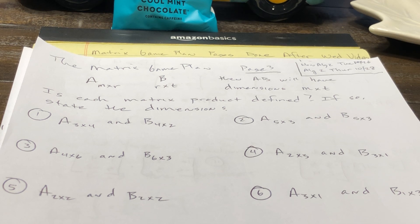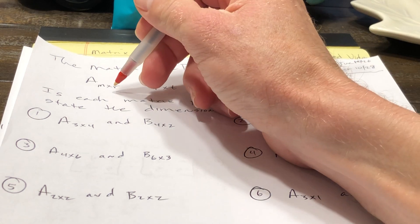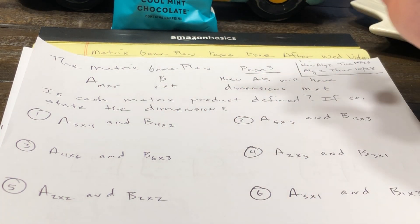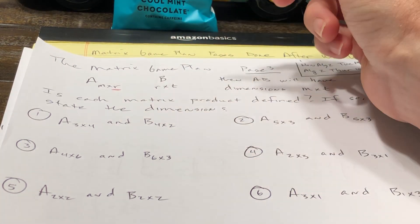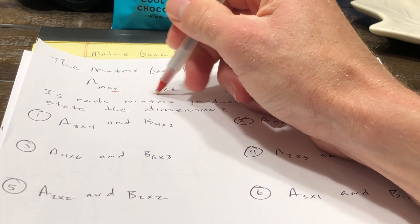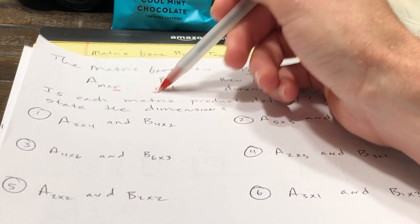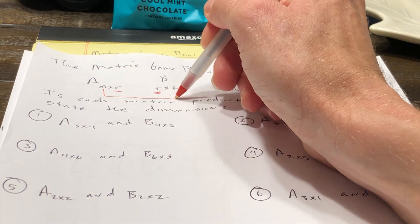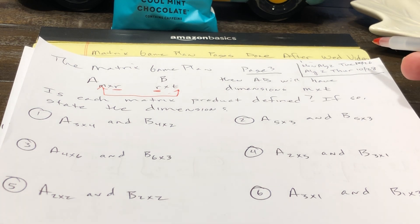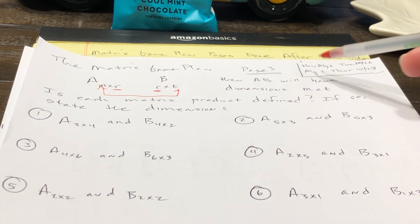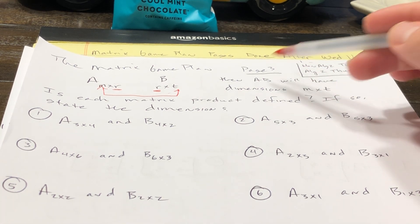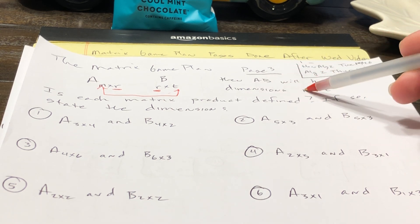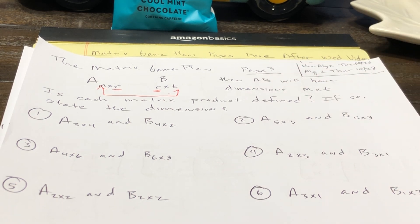Here's what you do: you can multiply matrices if the number of columns in the first matrix equals the number of rows in the second matrix. If those two numbers are equal, then you can multiply them together, and the resulting matrix AB will have dimensions m by t.